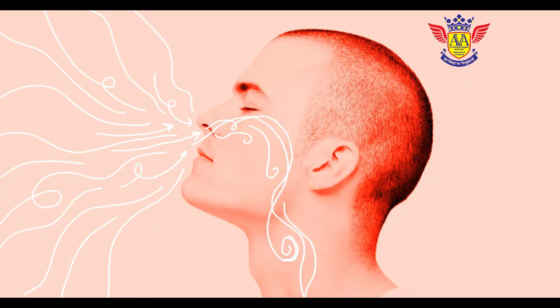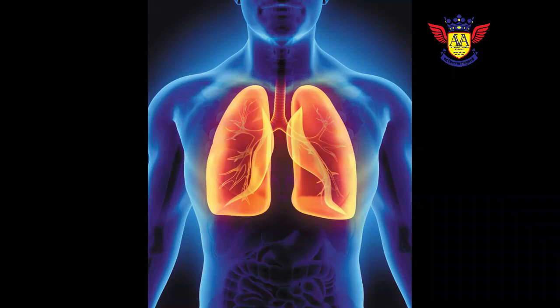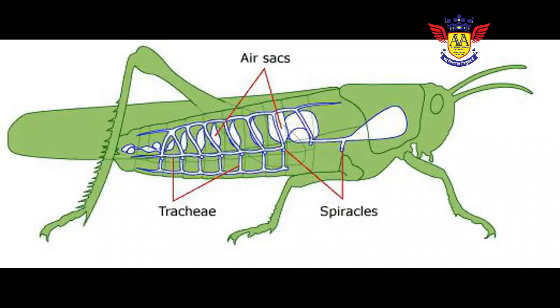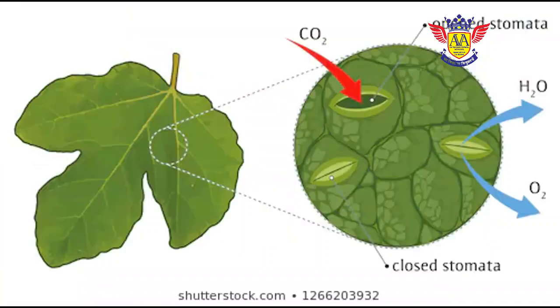All living things need air to breathe. Animals and human beings breathe through their nose — their respiratory organs are lungs. Fish breathe through gills. Insects breathe with the help of tiny pores called spiracles present on their body. Plants also breathe — they take in air through small pores called stomata on their leaves.